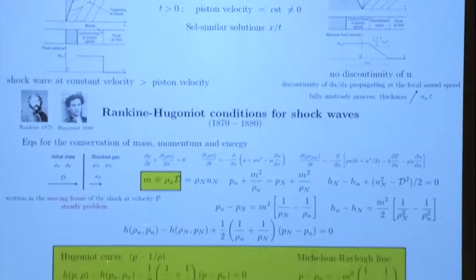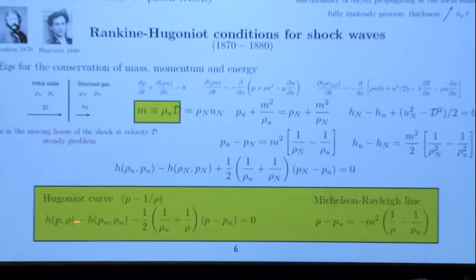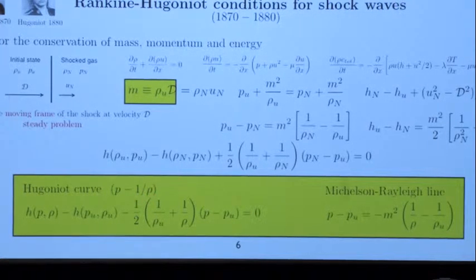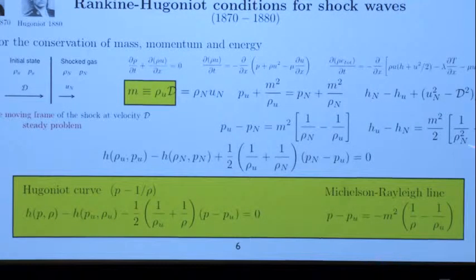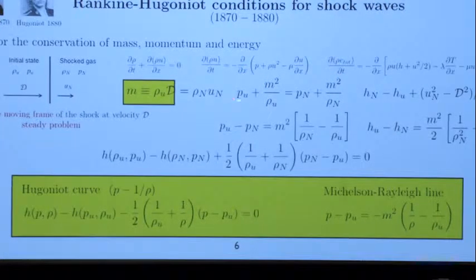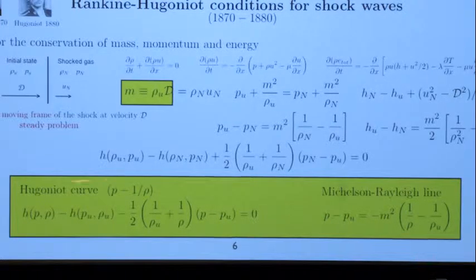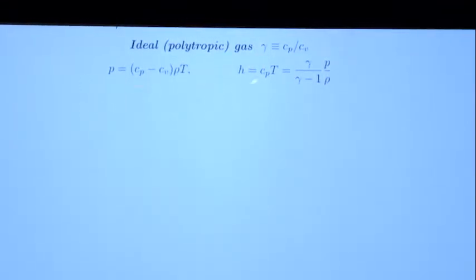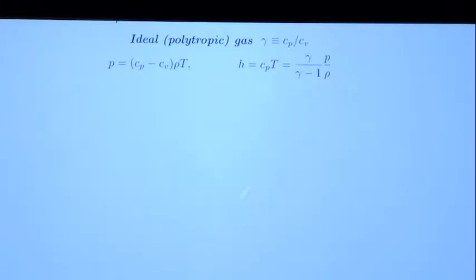The Hugoniot relation tells you the relation between density and specific volume across a shock wave. You also have another equation relating pressure and specific volume from the momentum equation — the Rayleigh line — which is a straight line in the P vs. 1/ρ plane. The expression for enthalpy is H = C_P T = (γ/(γ−1)) · P/ρ, where γ is the ratio of specific heats.